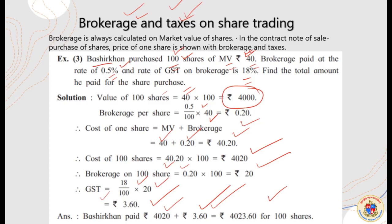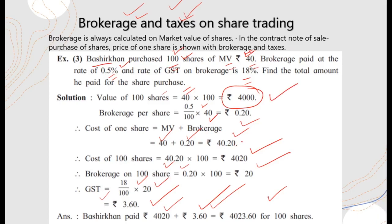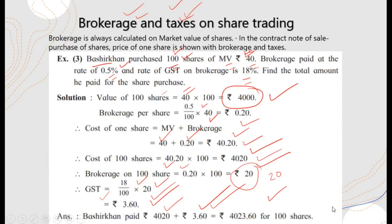To summarize: the total amount includes the share price (4,000), plus brokerage (20 rupees), plus GST on brokerage (3.60 rupees) — totalling 4,023.60 rupees for 100 shares. This concludes today's video, which is again almost half an hour long. We still have more content on financial planning and financial health, which will continue in the next video. Thank you.